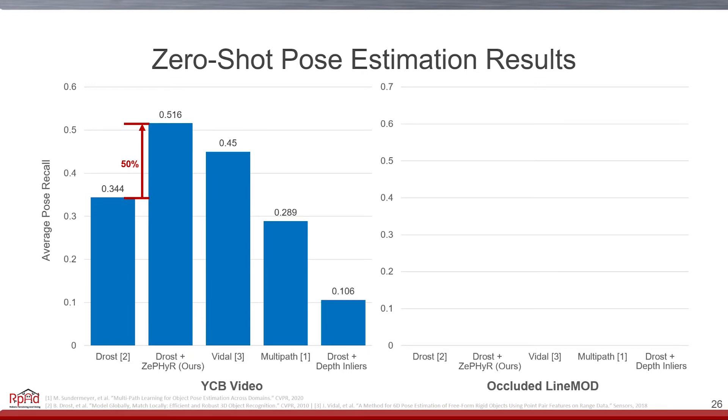Here, we also designed a simple baseline, where the depth in-layer counts are used as the scores of the pose hypothesis. And we can see that it gives very poor results.